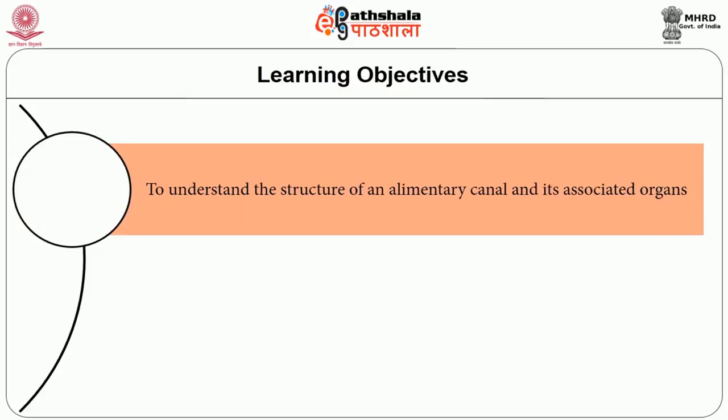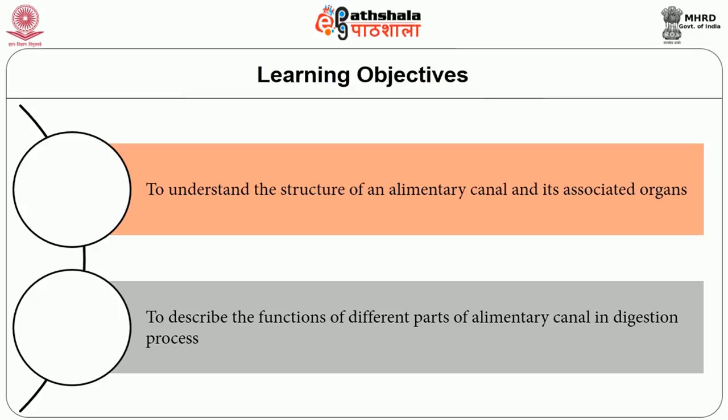The digested food materials are absorbed and transported to different parts of the body by the respective organs, where they get metabolized and used for various cellular activities. With this background, it is essential to understand the anatomy of the digestive system before knowing its mechanism. This module enables the learner to understand the structure of the alimentary canal and its associated organs, and to describe the functions of different parts of the alimentary canal in the digestion process.